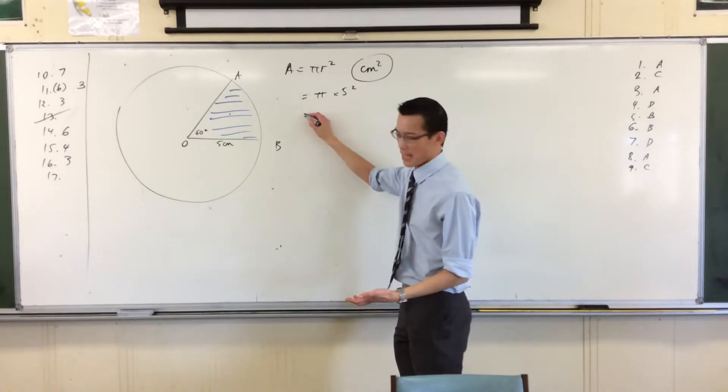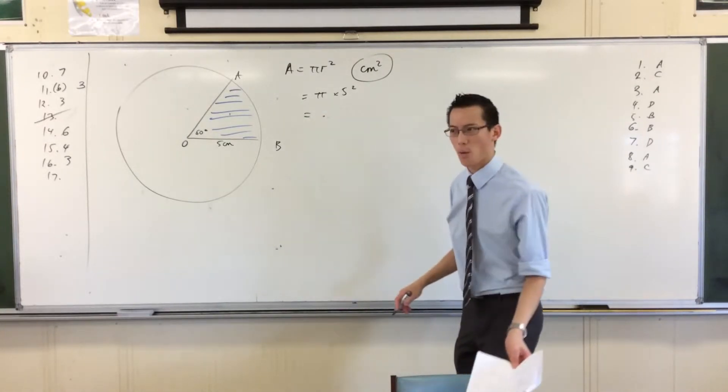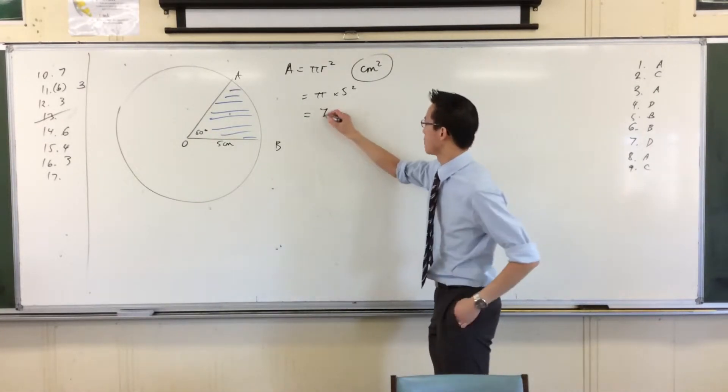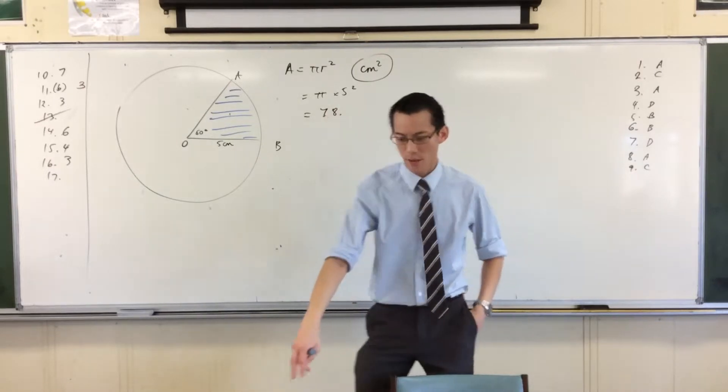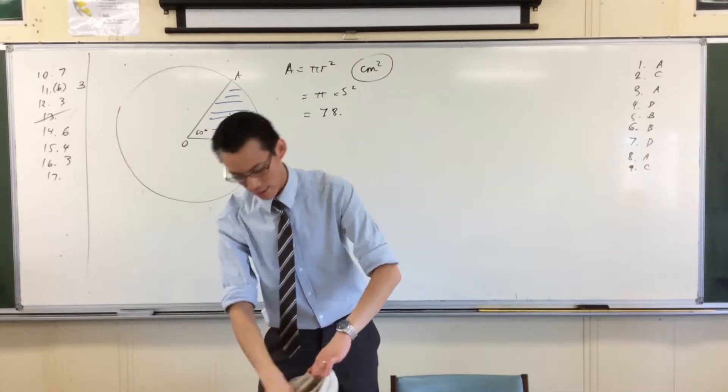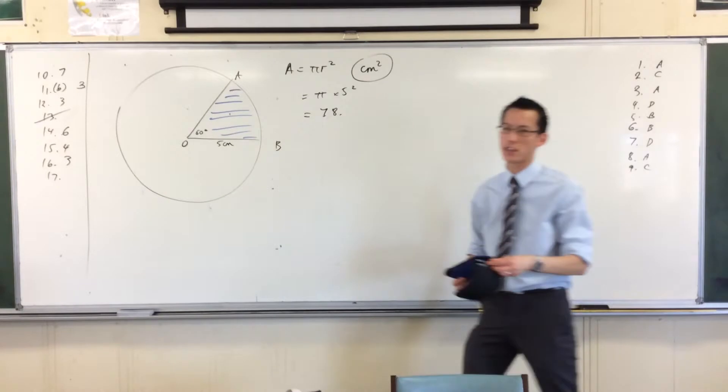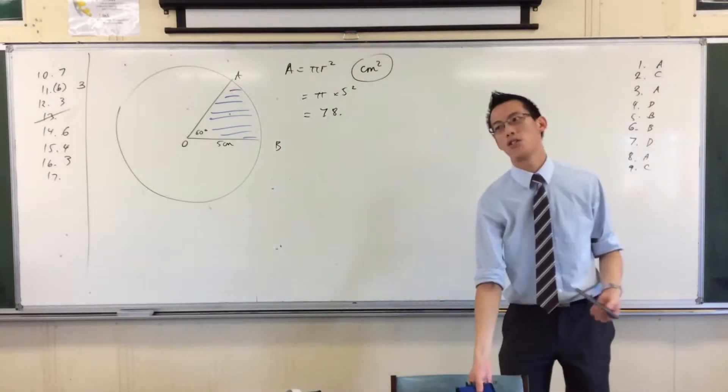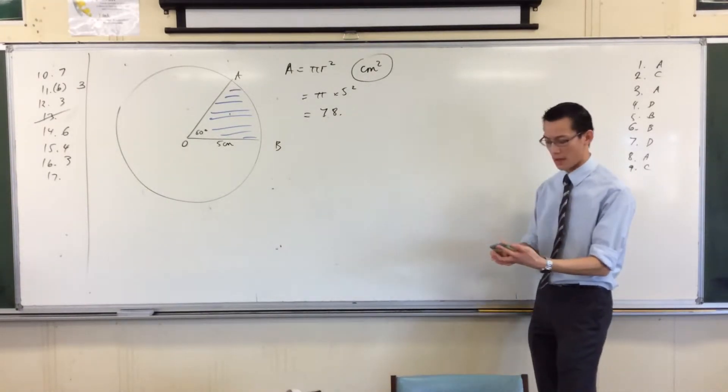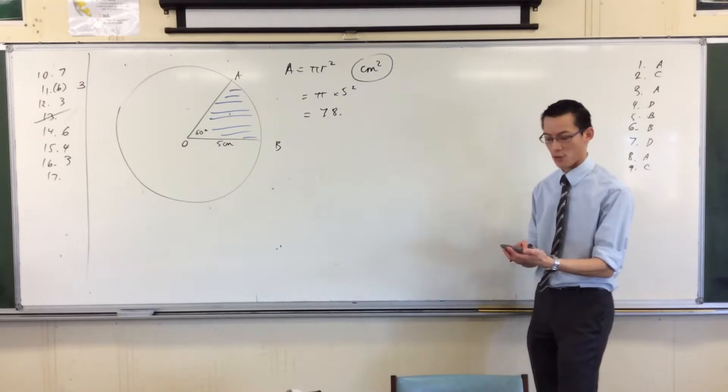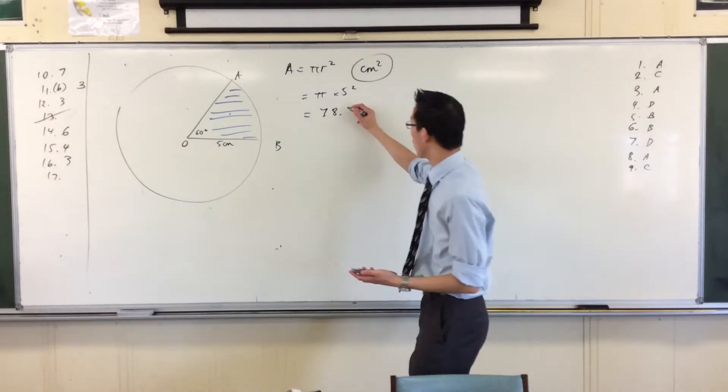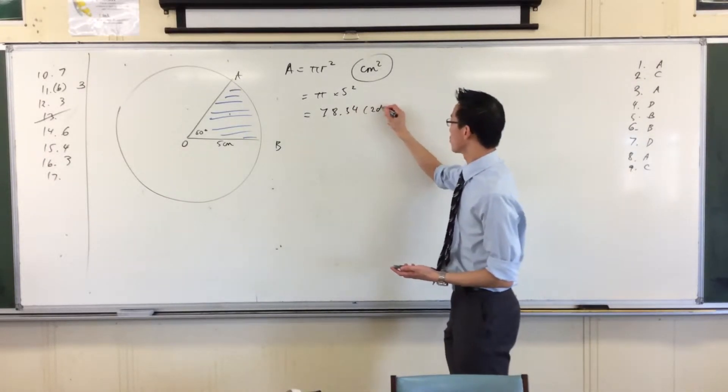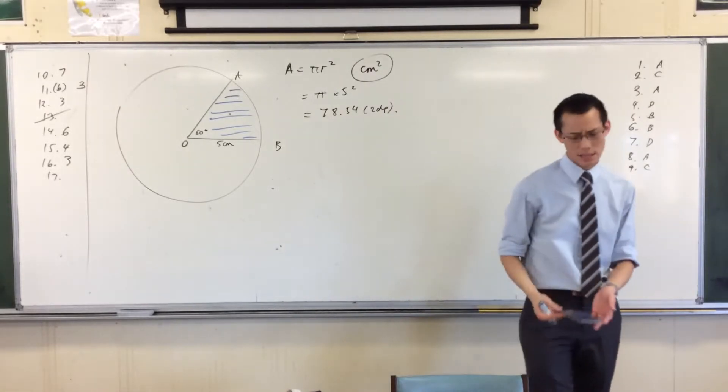You can then get your calculator out, and I think you get 78.54 something. Actually, if you've got your calculator there, you can double check and verify this answer. But that was the first mark. So a lot of people only knew how to work out the area of the circle, and that was okay. That gave you one mark out of two. Yeah, 78.54 to two decimal places. So there's your first step.